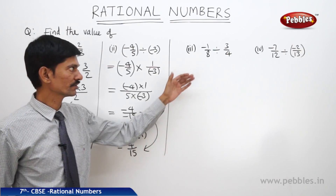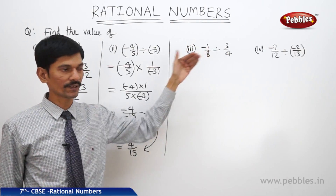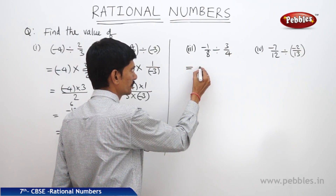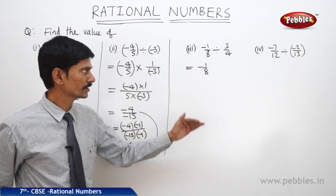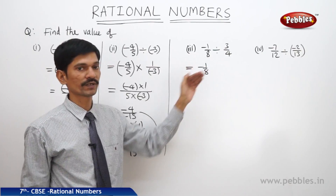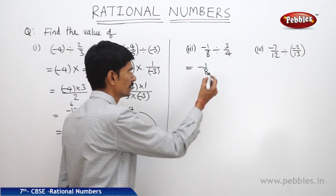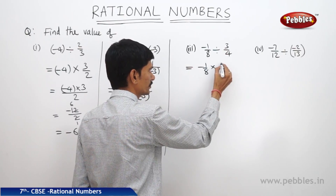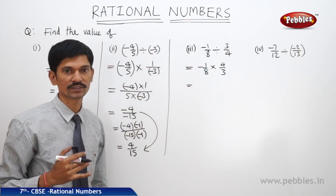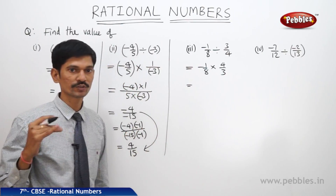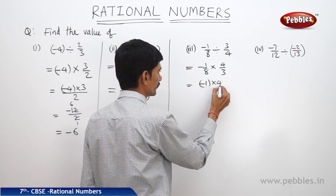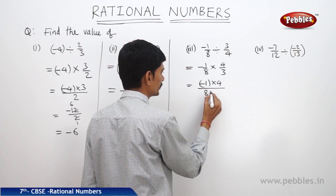The third question: minus 1 by 8 divided by 3 by 4. When we divide minus 1 by 8 by 3 by 4, first write minus 1 by 8 the same. Dividing by 3 by 4 means multiplying by the reciprocal of 3 by 4, which is 4 by 3. This is now normal multiplication of two rational numbers, so we multiply both numerators and denominators: minus 1 into 4 divided by 8 into 3.